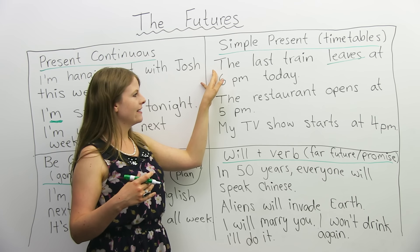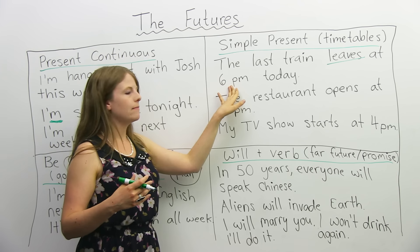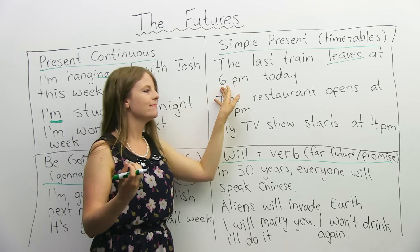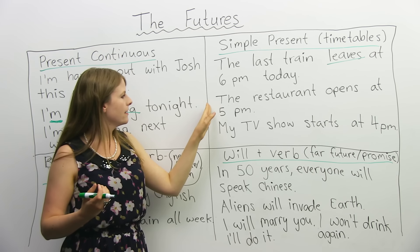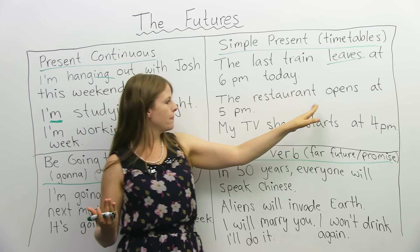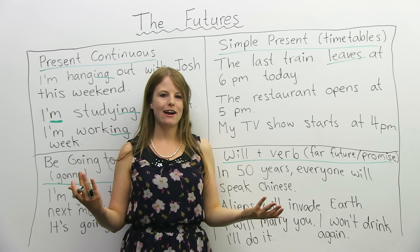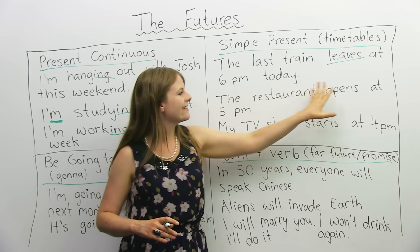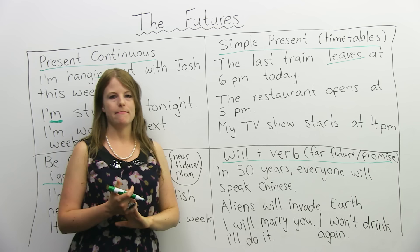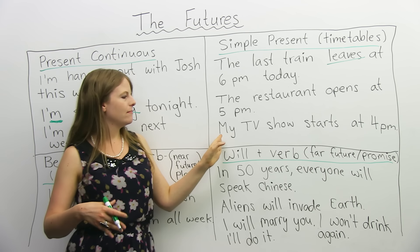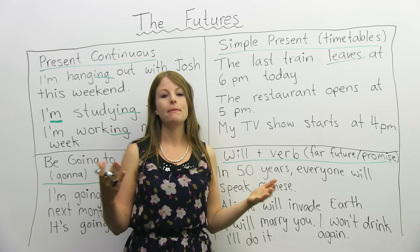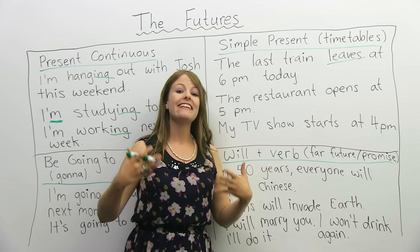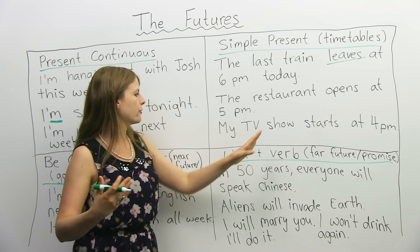Here are some examples. 'The last train leaves at 6 p.m. today.' So 6 p.m. hasn't happened yet — it's in the future, but because this is a scheduled event, we use the simple present. Here's another example: 'The restaurant opens at 5 p.m. today.' Right now it is 2 p.m., so this is going to happen in the future, but I use the simple present because this is a schedule. And here's a third example: 'My TV show The Big Bang Theory starts at 4 p.m.' It's a routine, it's a schedule that takes place in the future, so we can use the simple present here.